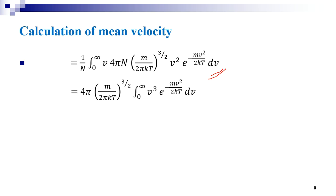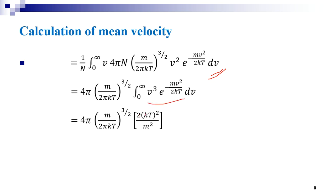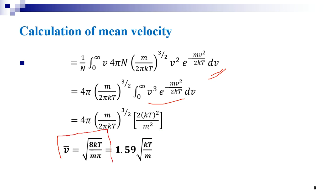This reduces to 4π(m/2πkT)^(3/2) ∫₀^∞ v³ · e^(−mv²/2kT) dv, which equals 4π(m/2πkT)^(3/2) multiplied by 2(kT)²/m². On simplification, we arrive at the expression for the mean or average velocity: v̄ = √(8kT/mπ), which can be rewritten as 1.59 √(kT/m). This is the expression for the mean or average speed of a gas molecule.